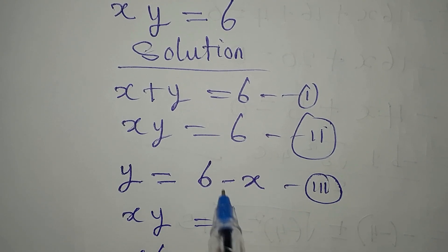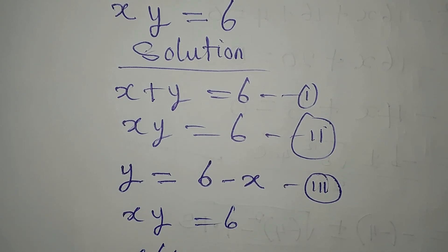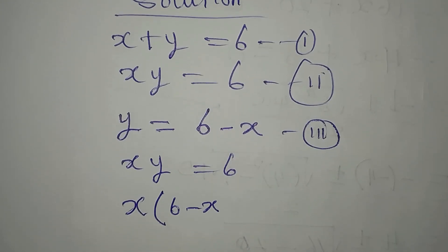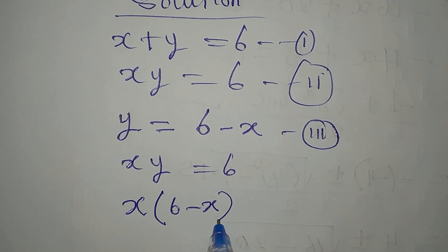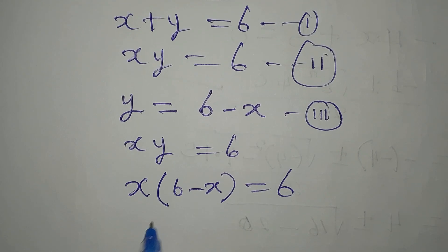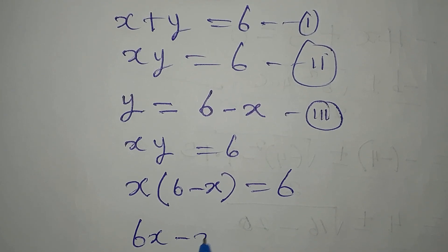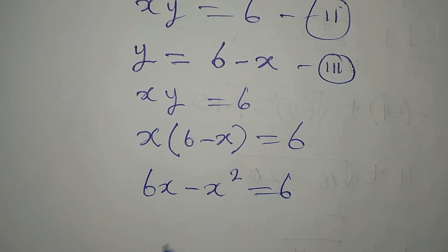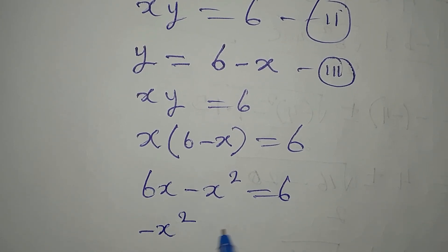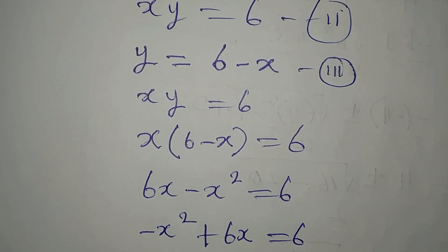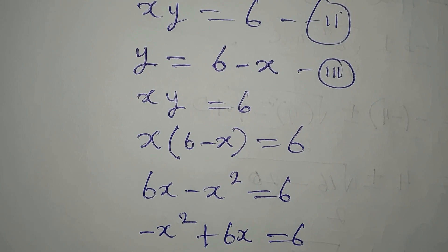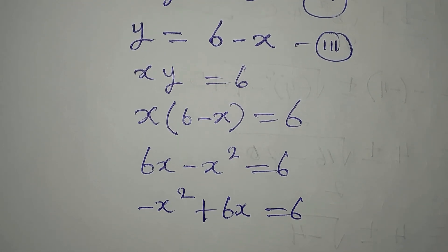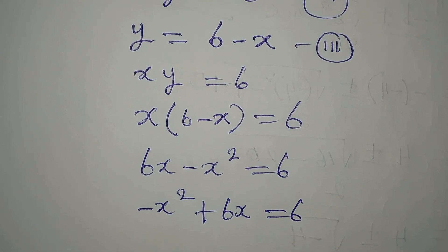Our equation 2 is x times y equals 6. Now we have x, but our y is 6 minus x. So we write x times (6 minus x) equals 6, which expands to 6x minus x squared equals 6. This means minus x squared plus 6x equals 6.